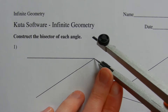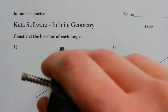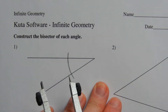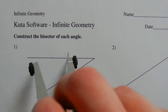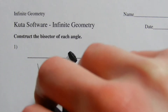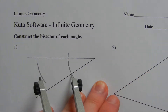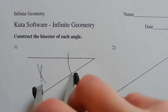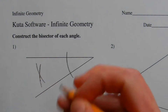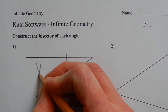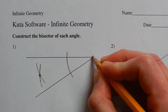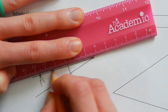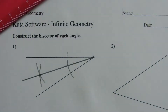Place one point on the vertex of the angle, then make an arc along that angle. Where that arc intersects each of the segments, we're going to place our compass and make a mark to the inside of that angle. Keeping our compass the same measure, move it to the other intersection and make another mark. Where those marks intersect, that point will lie on the angle bisector. Draw a line from the vertex through that intersection point — that is the angle bisector.